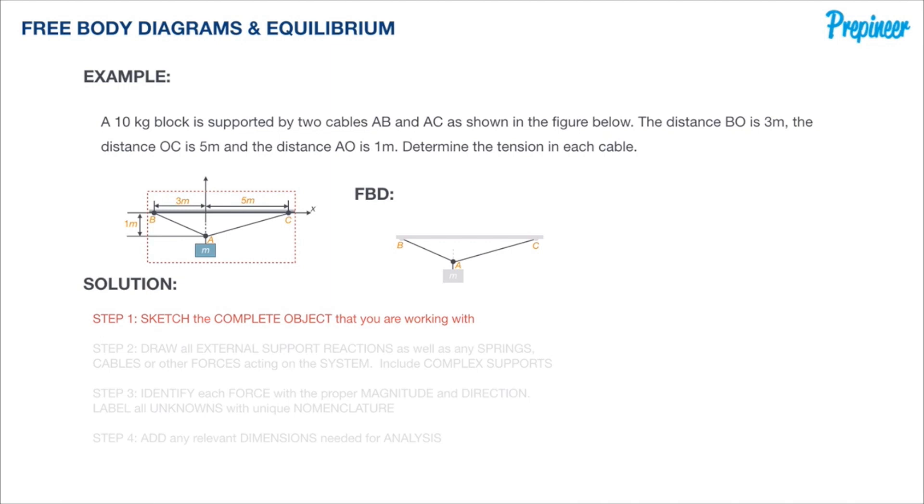Our next step is to identify all the external support reactions, the cables that are attached to our object, and any complex supports or self-weight. We don't have complex supports in this, but we do have cables. What we want to do is simplify this down and isolate point A.